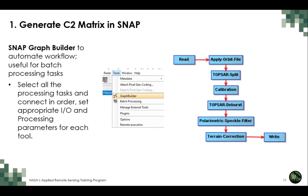To save time and complete batch processing tasks in SNAP, all the preceding processing steps can be set up in SNAP Graph Builder to automate the pre-processing workflow. This is especially useful when a large number of images need to be processed. Be sure to select all the correct input, output, and processing parameters for each tool. A saved graph can then be run through the batch processing tool.